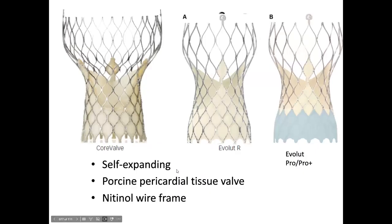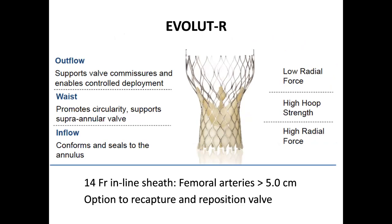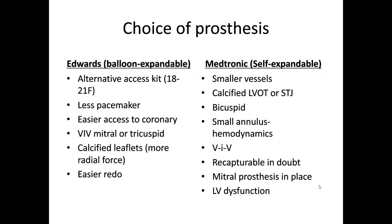You have the self-expanding valve — porcine pericardial tissue with an external wire frame and less radial force, but still very performant. For alternative access, now that our alternative access is mainly carotid or trans-axillary, I'm not a fan of the alternative kit for the balloon-expandable valve because it stayed at 18-21 French — too large. I usually use the Accurate Neo 2 or the CoreValve Evolute Pro Plus. There are fewer pacemakers with the Edwards valve. It's easier to re-access coronaries, and you can do valve-in-valve mitral or tricuspid. The self-expanding valve is better for smaller vessels and patients with calcified LVOT or STJ to prevent rupture. For bicuspid, the Evoluted is the only one approved.